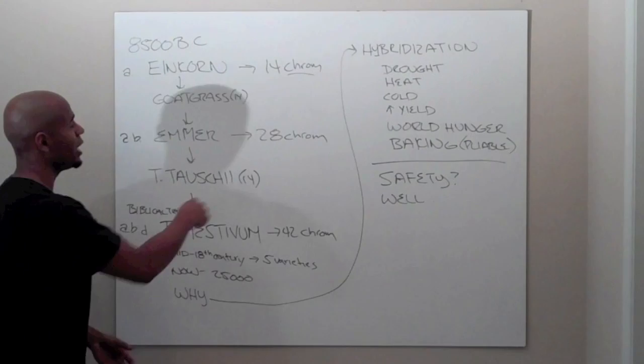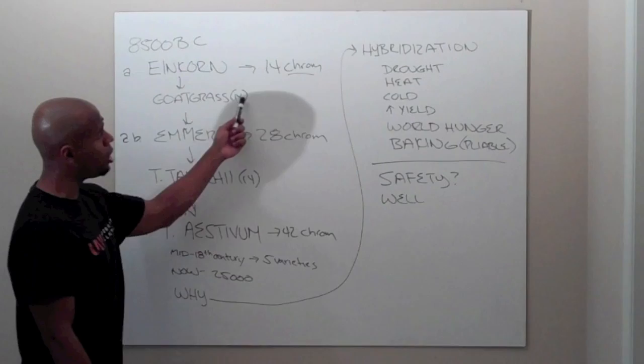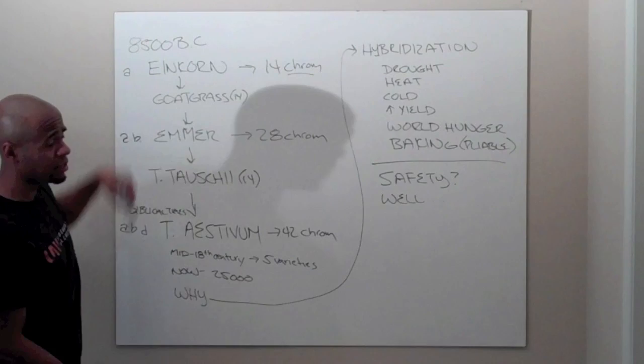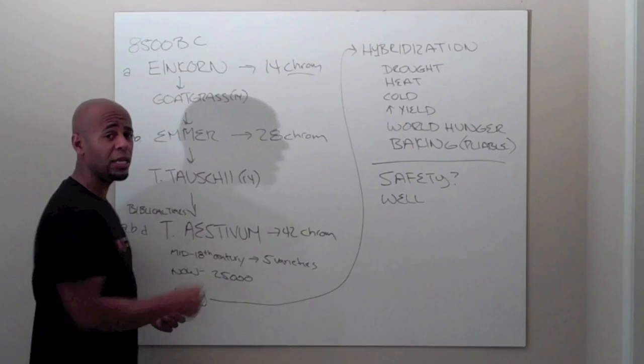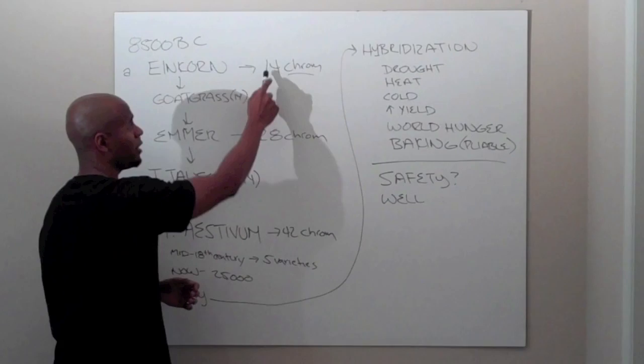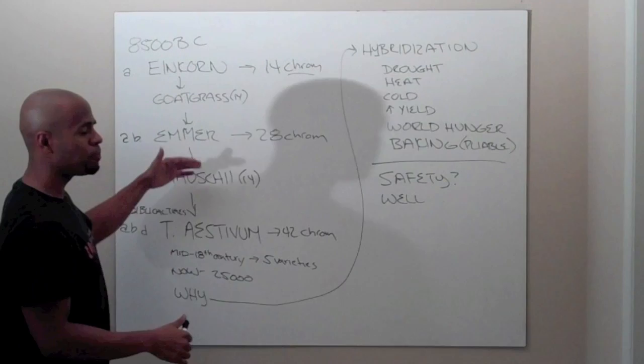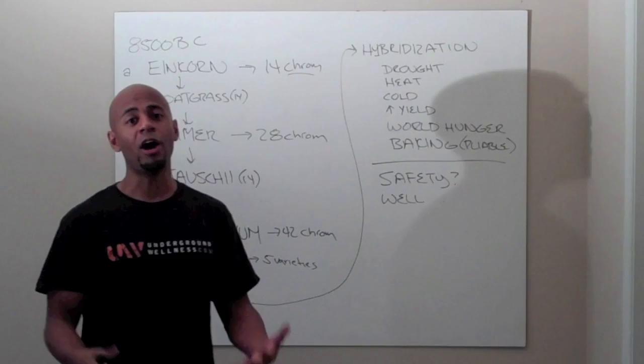Now what happened is that when einkorn was cultivated, it got itself a girlfriend, and that girlfriend's name was goatgrass. Goatgrass also had 14 chromosomes, was rather simple. They were together for a little while and they made themselves a baby, and that baby's name was Emmer. Emmer has 28 chromosomes, a little bit more complex. That's 14 plus 14 equals 28, they add on top of each other.